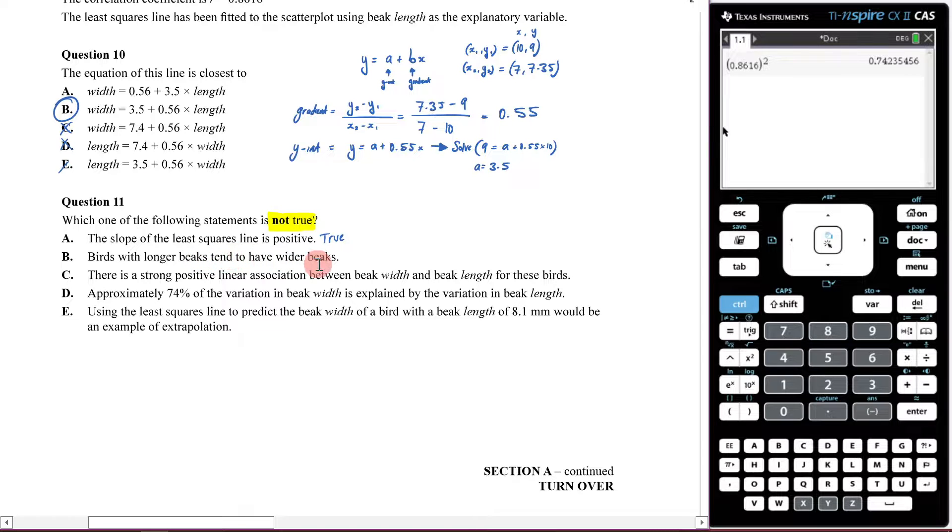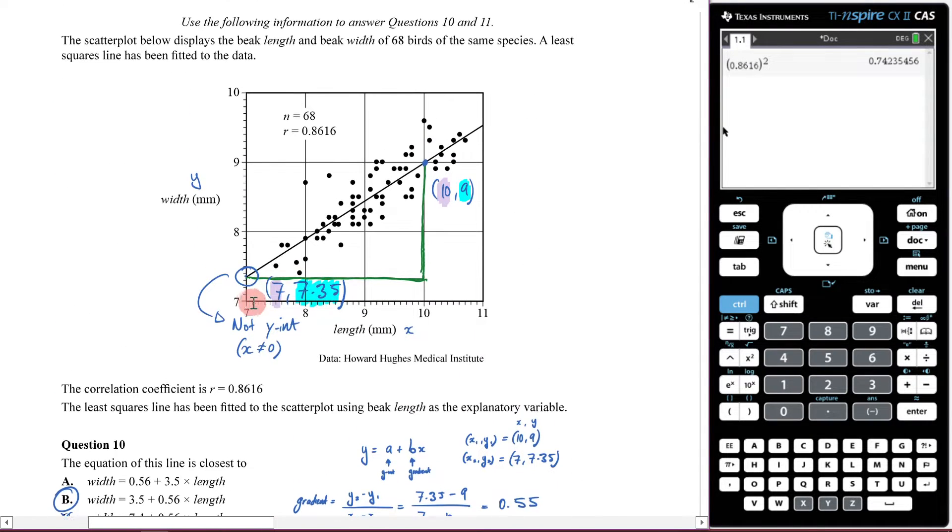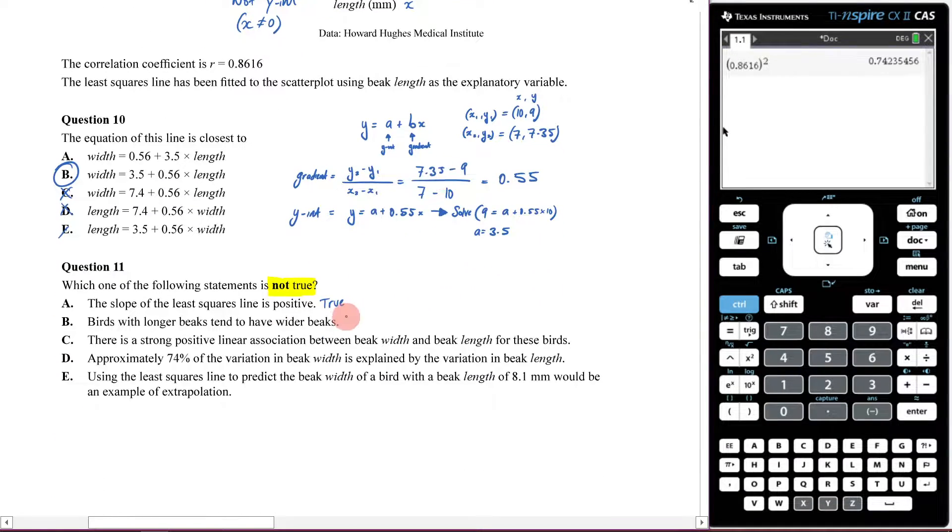Birds with a longer beak tend to have wider beaks. That's also true - if you have a longer beak, you tend to have a wider beak, and that's why it's going up. So that is also true.